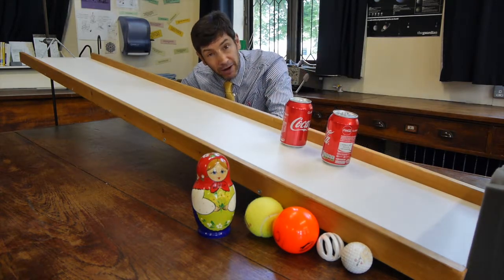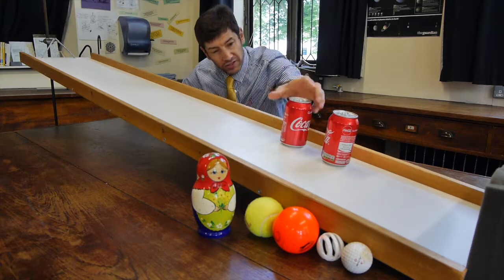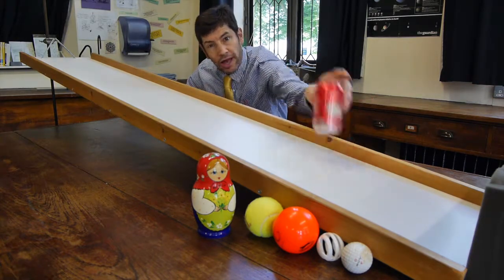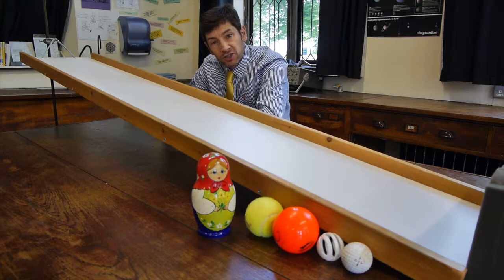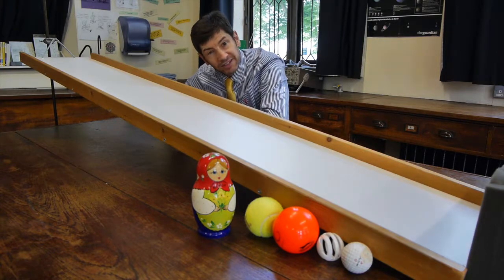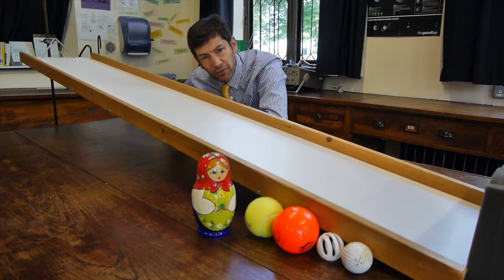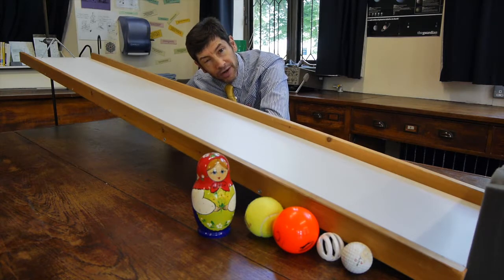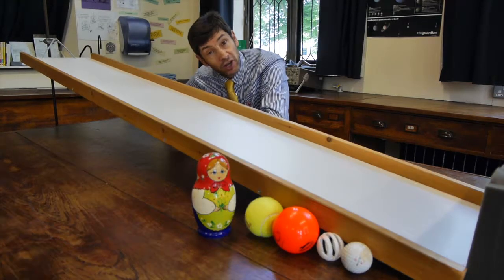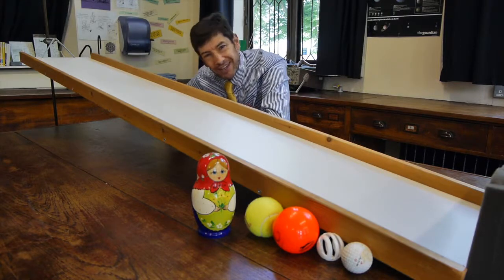So let's repeat that experiment that I did a while back with the two cans. One of them is full and one of them is empty, and what we're going to do is roll them down the slope and see which one hits the end first. Give some thought to what might happen with the heavier one and the lighter one, and which one finds it easier to move.